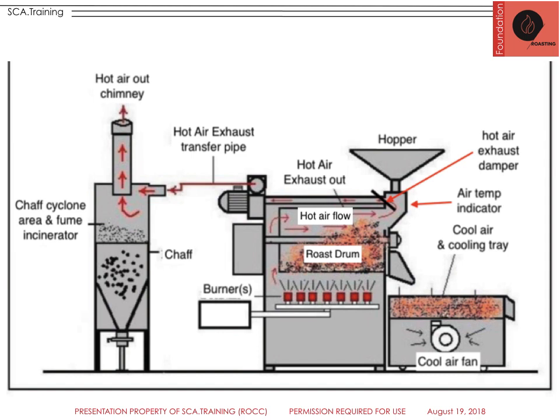At different phases in the roast cycle, we actually change the amount of air we let recirculate within the roaster or circulate out into exhaust. When the roast is finished, we'll release the coffee down into the cooling tray. Cool air is produced by a fan — a suction that pulls air from above down through the coffee bed — and then it exits out of the machine through the exhaust.